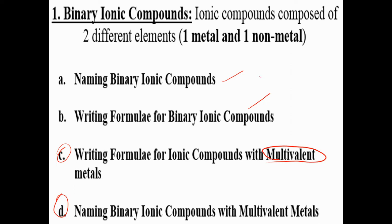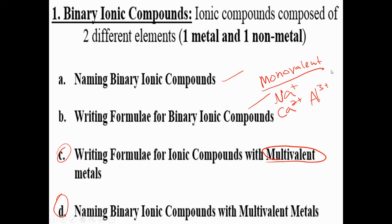The ones we dealt with before had monovalent metals, meaning they had only one charge. For example, sodium as an ion can only be sodium plus one. Calcium as an ion can only be calcium two plus. Aluminum as an ion can only be aluminum three plus. But there are some metals in our periodic table, especially the transition metals in groups three to twelve, that can have more than one charge depending on the conditions.